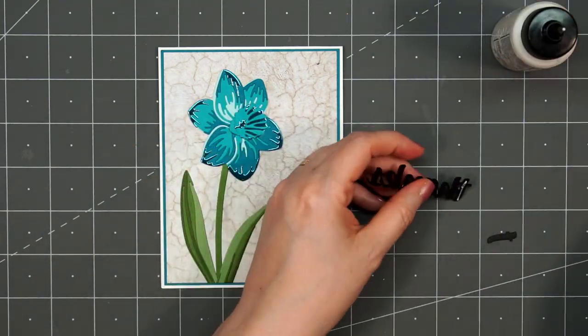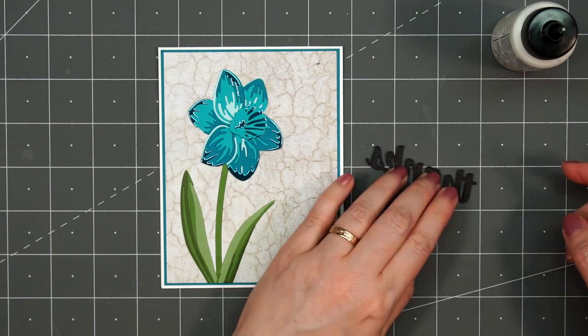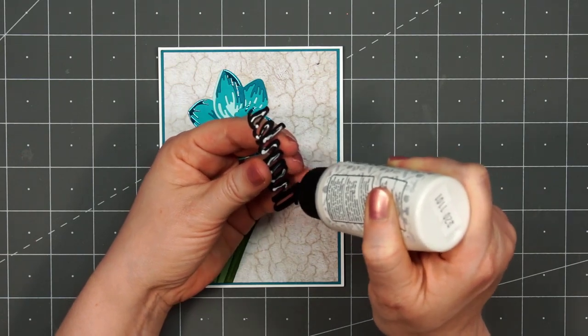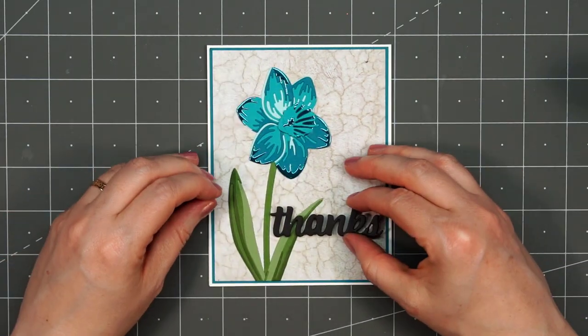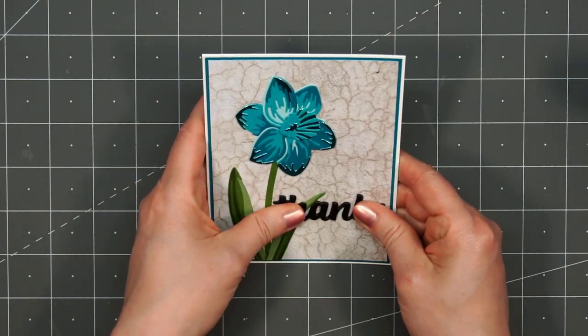That way when I adhere it on top of the leaf, there's not a lot of extra dimension. It's almost at the same level. Now I'll put liquid adhesive on the back and adhere it to the card. I like how the black adds some really nice contrast against the rest of the background.